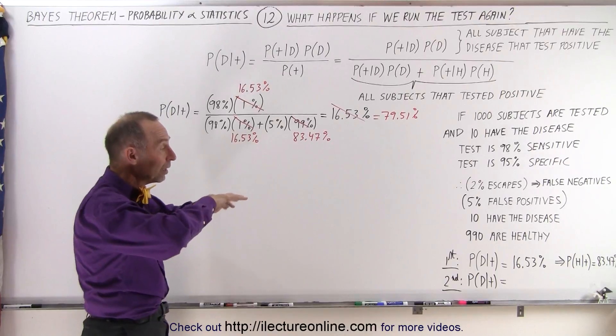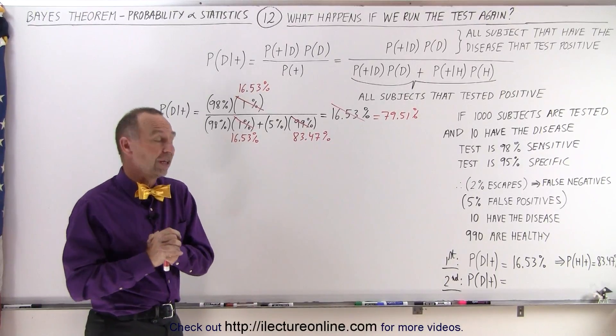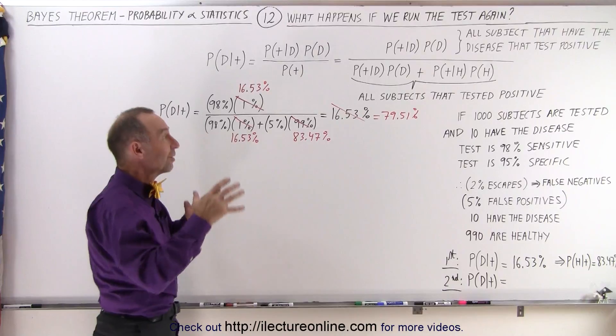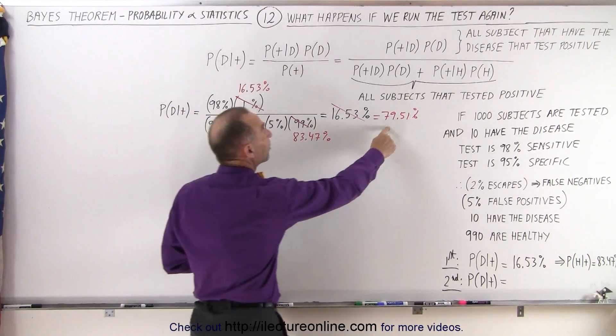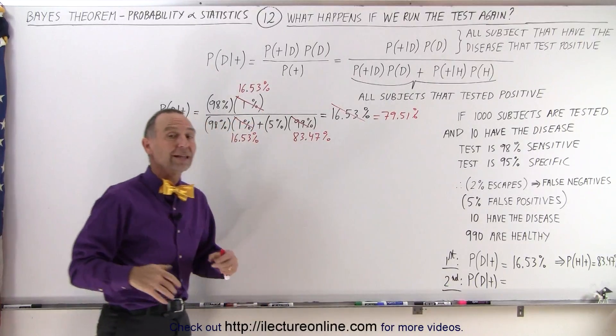if you only test those individuals that tested positive the first time, you test them a second time and they test positive a second time, now you're 79.51% sure that they have the condition.